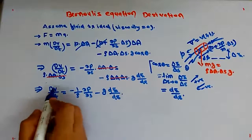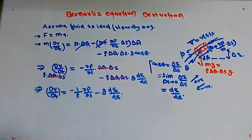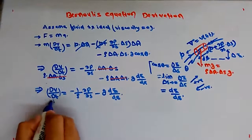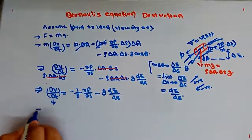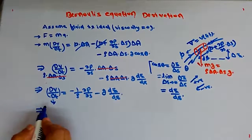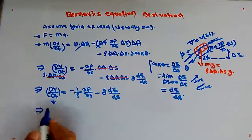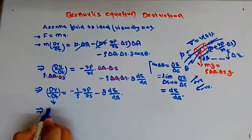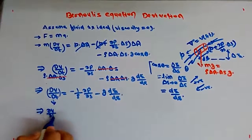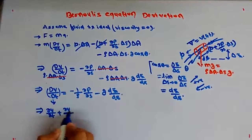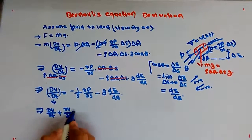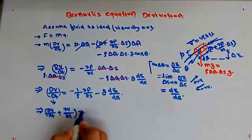The substantial derivative dV/dt has two components: one is the temporal acceleration (a function of time), and the other is the convective acceleration (a function of space or coordinates). This combined equation is known as the Euler equation.